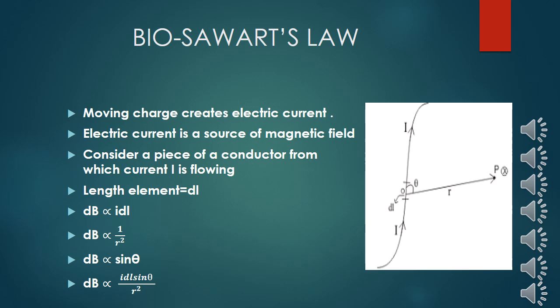The magnetic field is created by this current element, and we can find out the magnetic field at point P through this current element. This point P is at a position R, making an angle theta with DL. Some magnetic field is produced here, and the strength of that magnetic field is dB. There is a current element DL in which current I is flowing. Point P is at a distance R, and this position vector makes an angle theta with the current element DL.